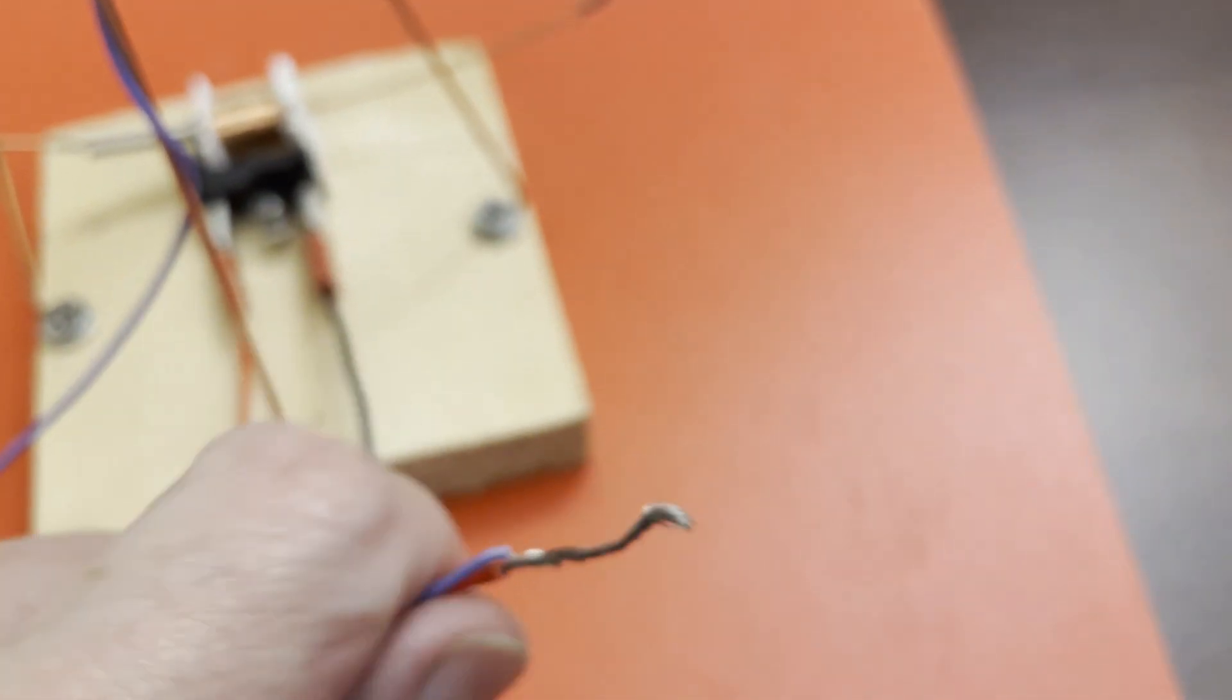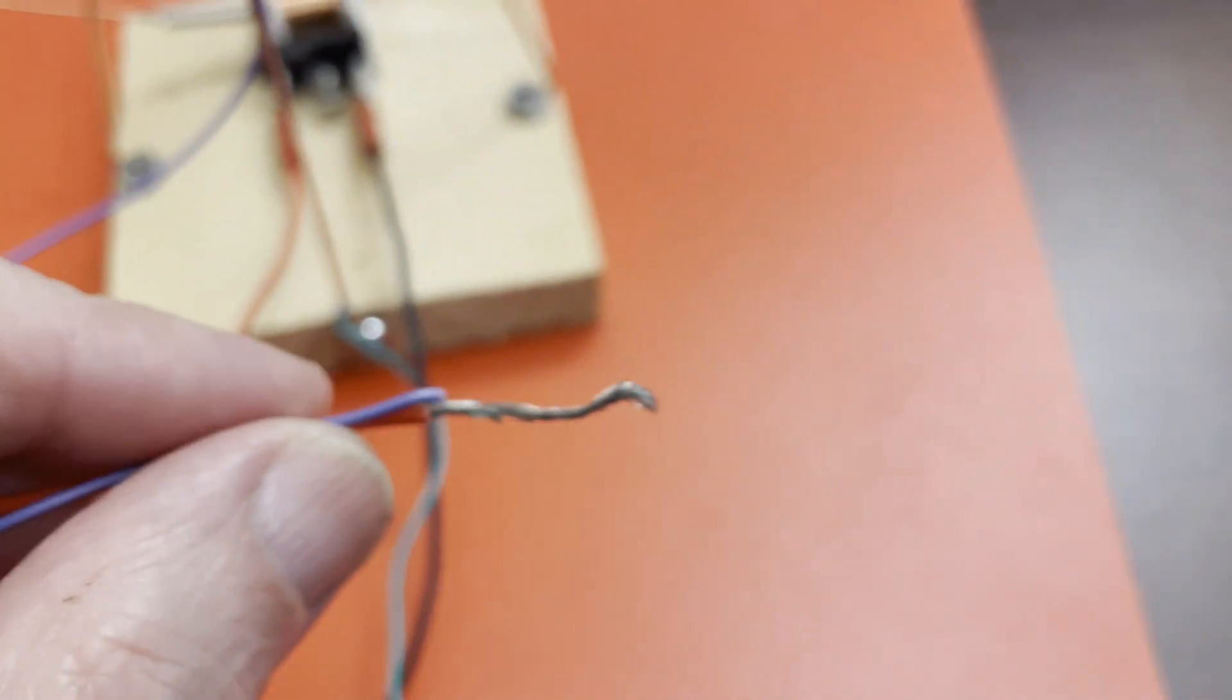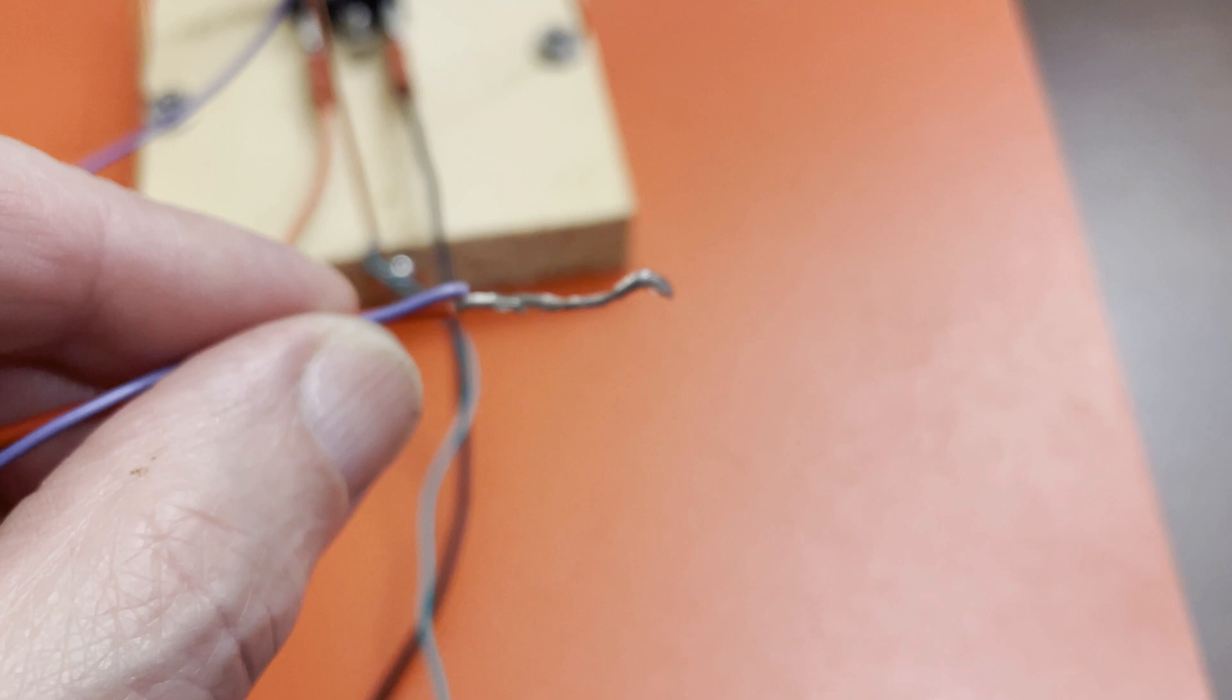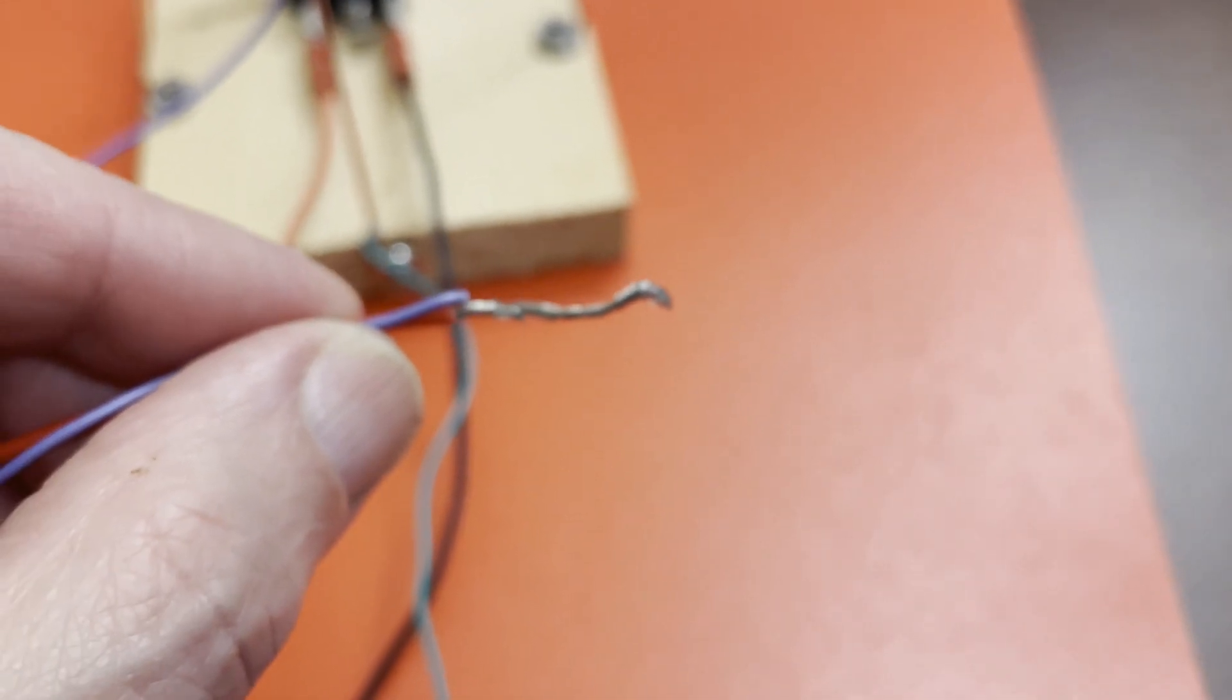Then join the switch and the coil in series, whichever way works, it's trial and error, or just join them in series and try the battery polarity, whichever way works. So you've got two wires joined and two wires free.